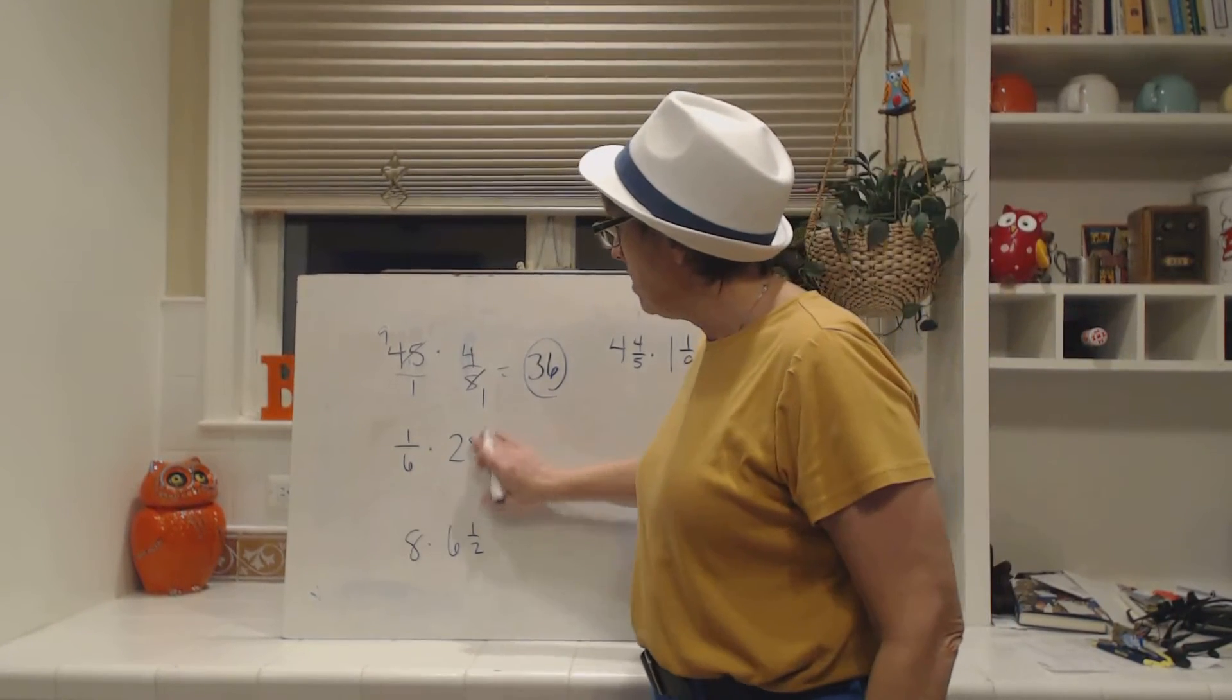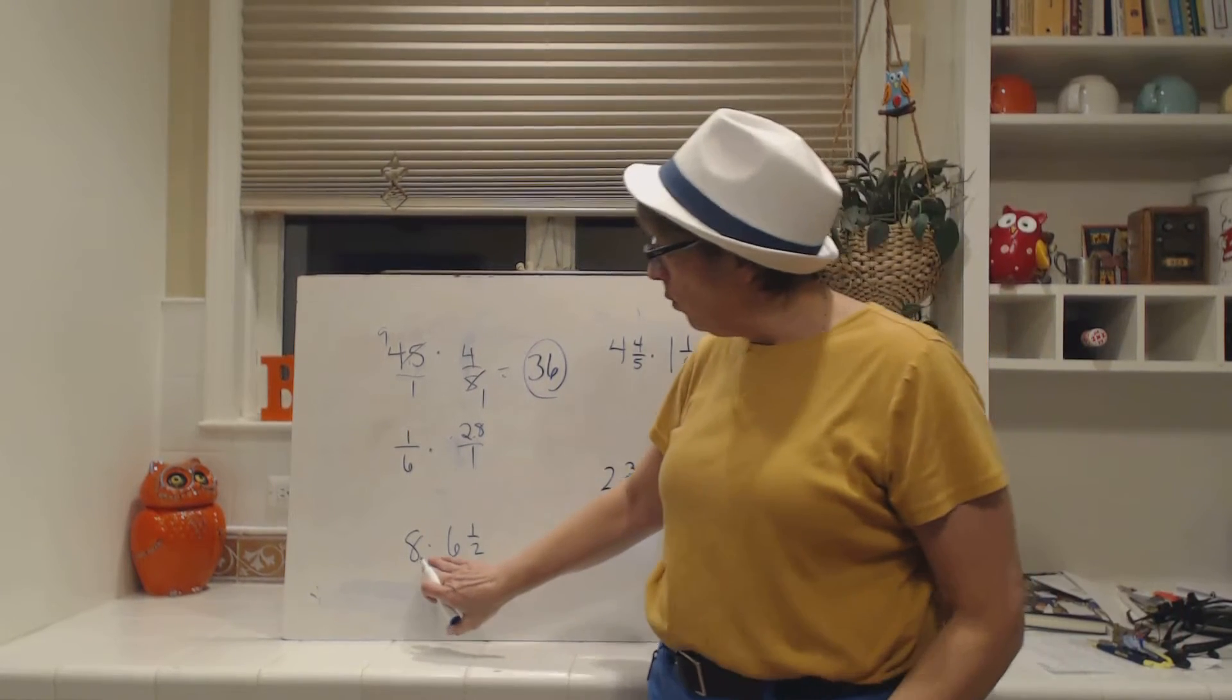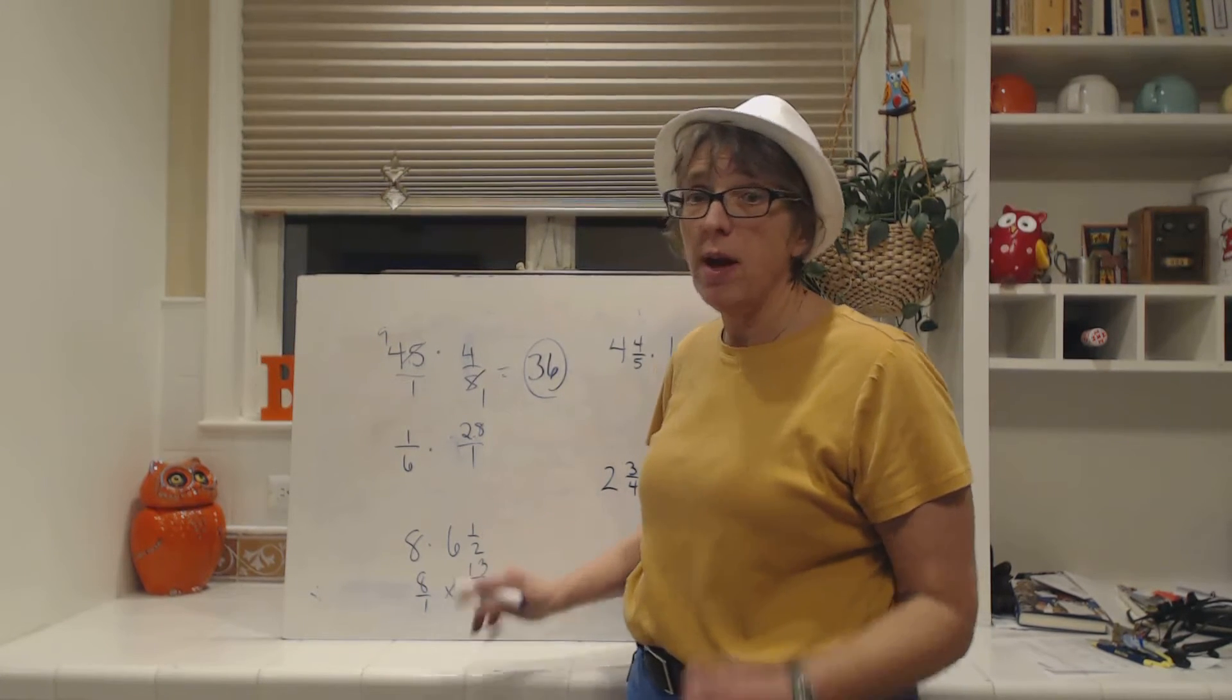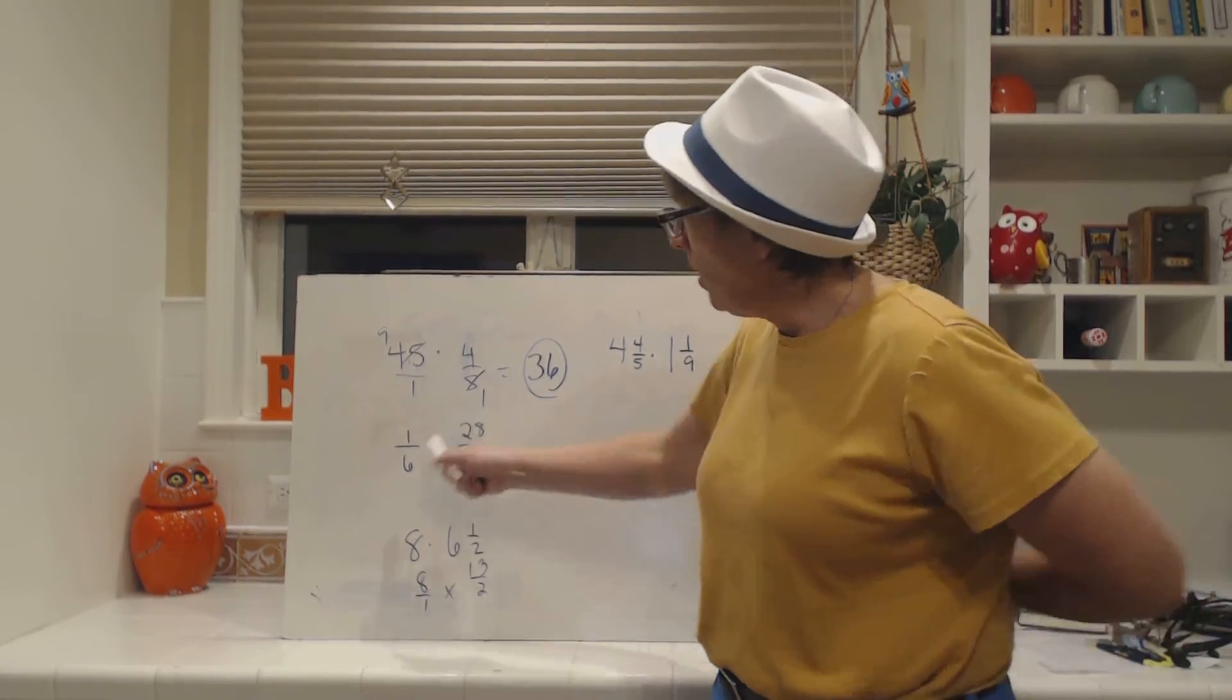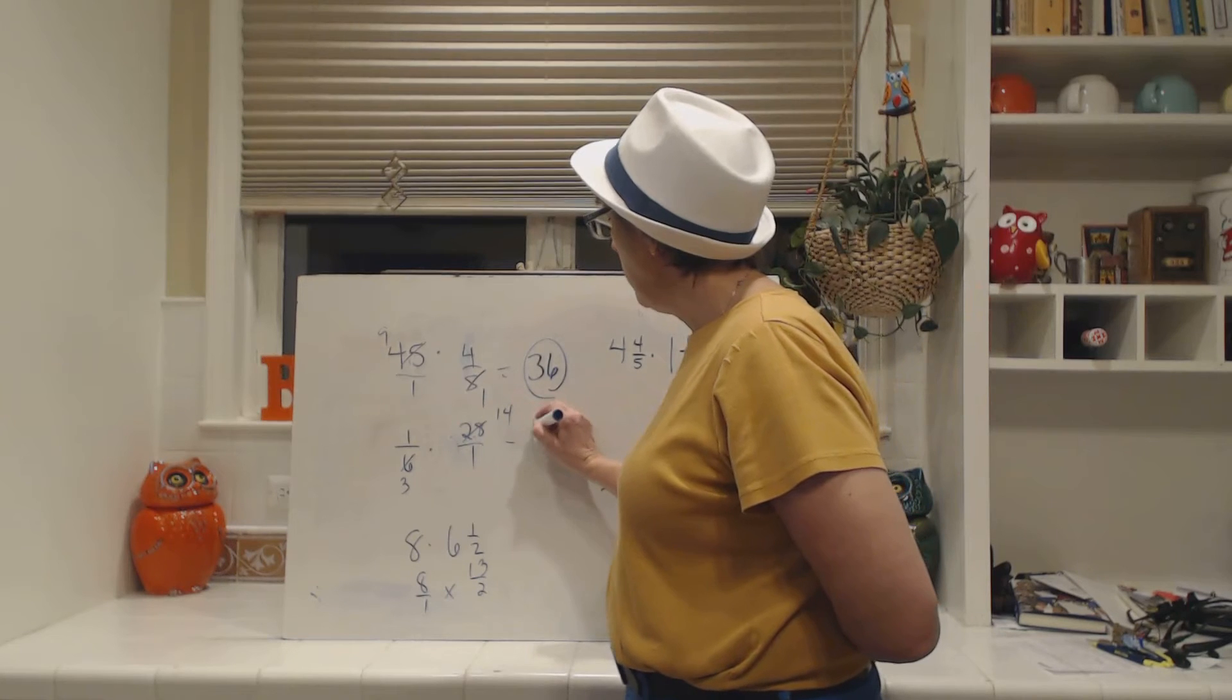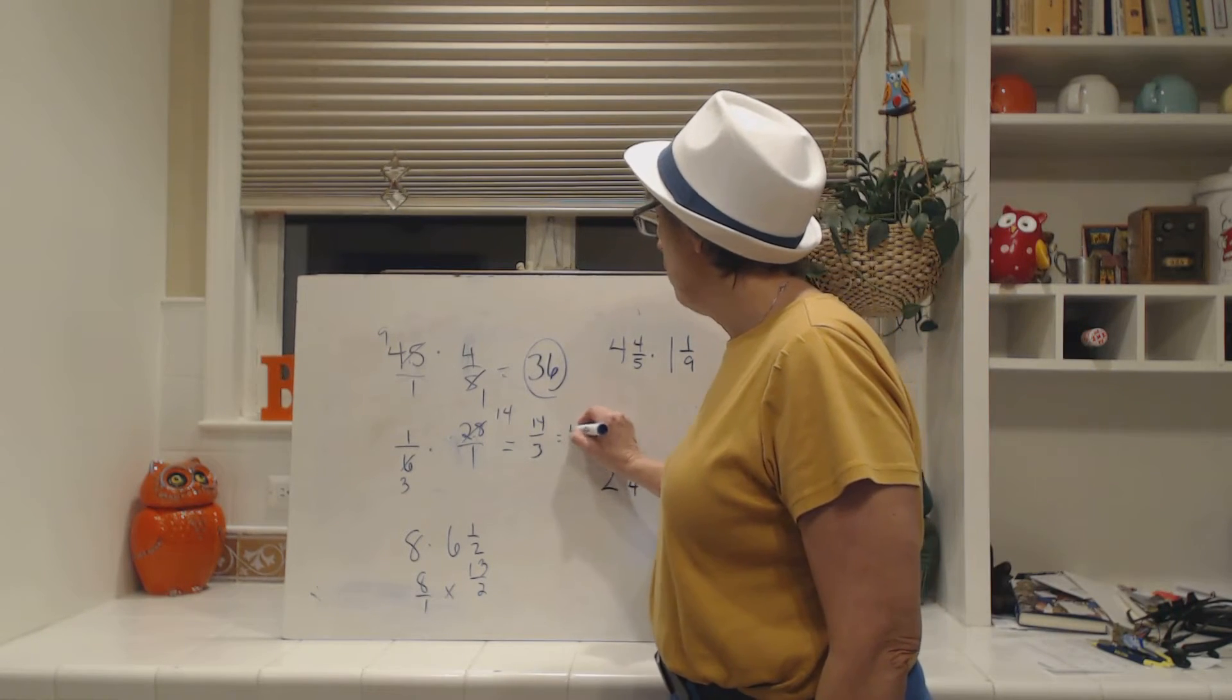Now here we have 1/6 times 28. I'm going to put 28 over 1. And when you write your problems, you can go ahead and make the whole number as 28 over 1, or instead of writing 8 times 6 and 1/2, you can write 8 over 1 times 13/2 because we're changing 6 and 1/2 to an improper fraction, and you're supposed to know how to do that. 6 times 2 is 12 plus 1 is 13/2. But let's go back to this one. What does 6 and 28 have in common? They have a 2 in common. So 6 divided by 2 is 3, and 28 divided by 2 is 14. Now, when I get 14/3, you have to change that back into a mixed number. You can't leave it as an improper fraction when you're multiplying mixed numbers. So this goes into this 4 and 2/3.